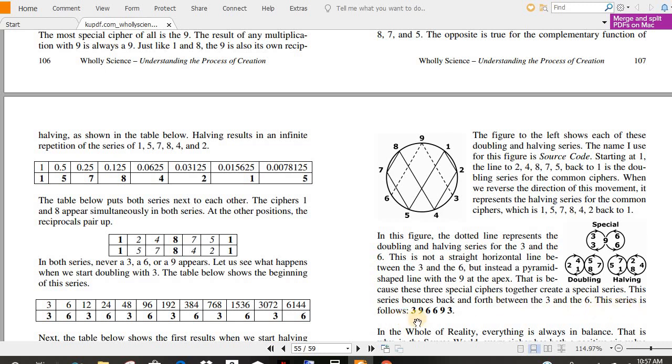In the figure, the dotted line represents doubling and halving series for the 3 and the 6. This is not a straight horizontal line between the 3 and the 6, but instead a pyramid-shaped line with the 9 at the apex. That is because these 3 special ciphers together create a special series. This series bounces back and forth between the 3 and the 6. This series follows 3, 9, 6, 6, 9, 3.